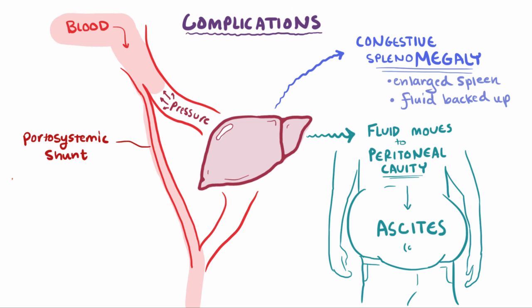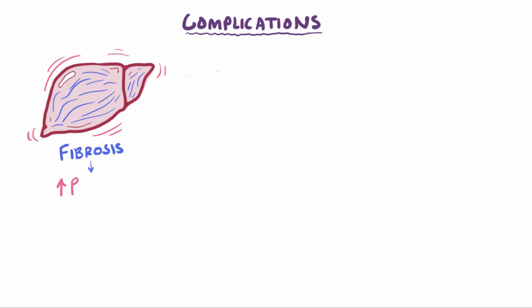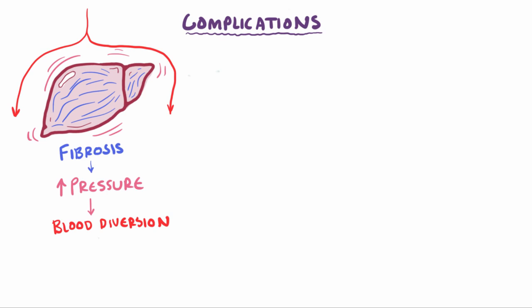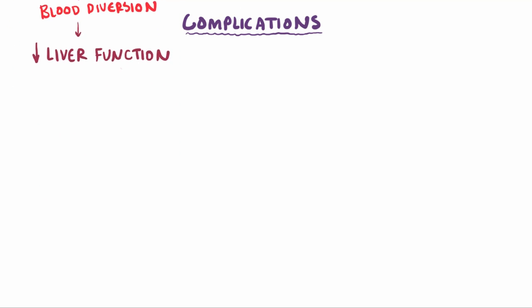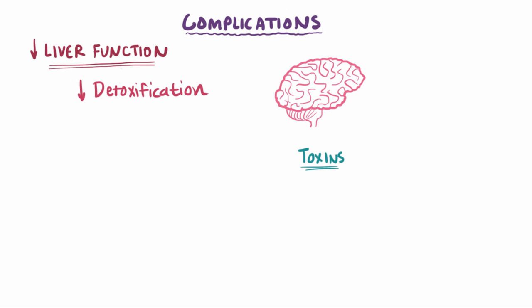Though not fully understood, these changes in portal flow ultimately trigger renal vasoconstriction — increased resistance in the renal circulation — which decreases blood flow through the kidneys, leading to decreased filtration and hepatorenal failure, where kidney failure follows liver failure. The fibrotic tissue, pressure buildup, and diversion of blood from the hepatic circulation essentially reduces the number of functional sinusoidal veins and portal triads. As you have fewer of these basic liver functional units, your liver becomes less able to do its job of detoxification. When the liver isn't detoxifying the blood, toxins can get into the brain and cause mental deficits — a condition known as hepatic encephalopathy.